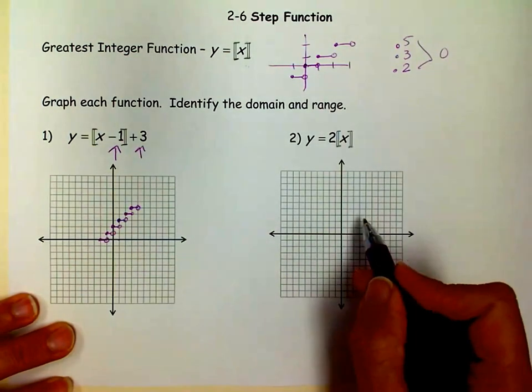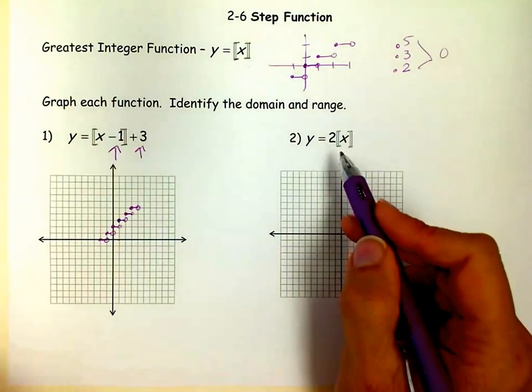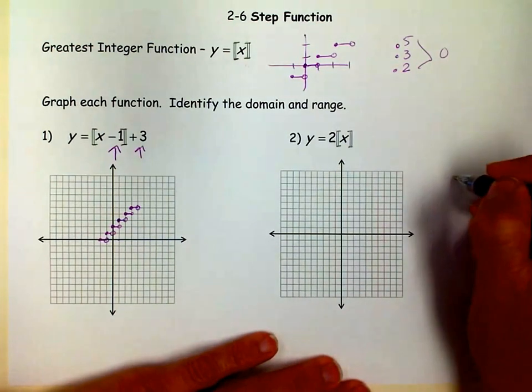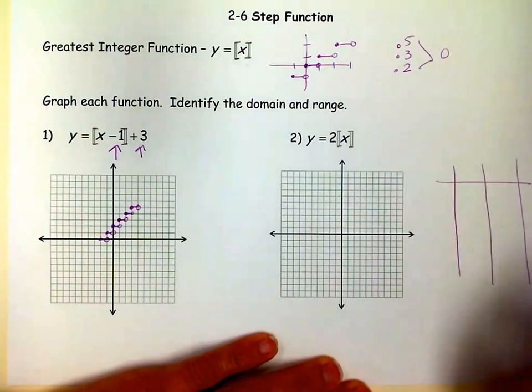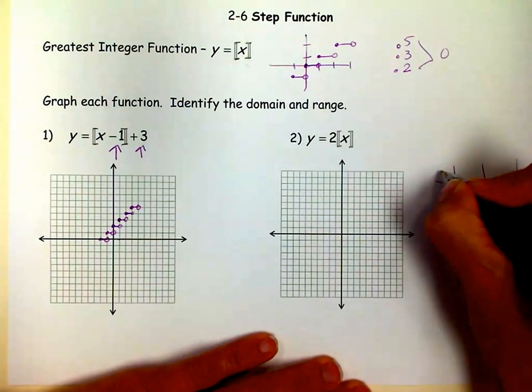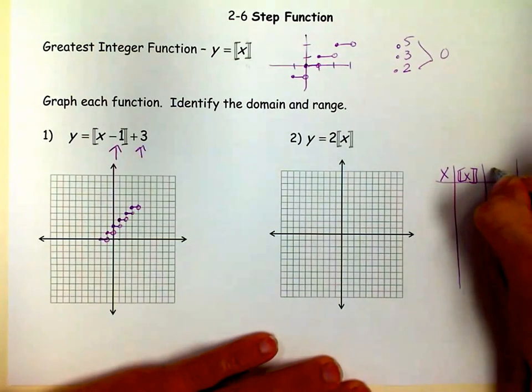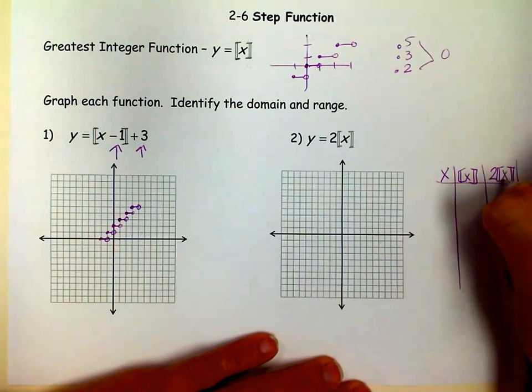Now, over here, I haven't shifted left, right, or up, or down, but I've vertically stretched it. So let's think about what that means. If you want, it might be helpful to write a little t-chart. Now, this has three bars because I want to show you. I want this to be the X, and then I want this to be the greatest integer function, and then I want this to be 2 times it. I'm going to break it down.